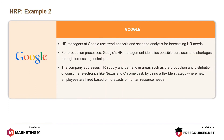The next example is Google. HR managers at Google use trend analysis and scenario analysis for forecasting HR needs. For production processes, Google's HR management identifies possible surpluses and shortages through forecasting techniques. The company addresses HR supply and demand in areas such as the production and distribution of consumer electronics like Nexus and Chromecast, by using a flexible strategy where new employees are hired based on forecasts of human resource needs.